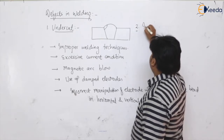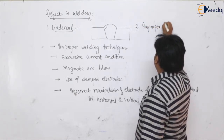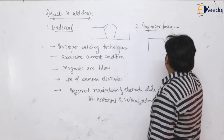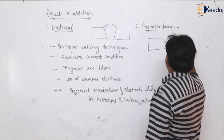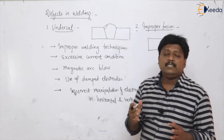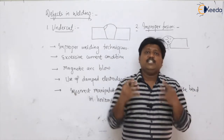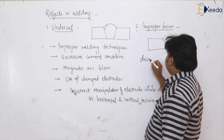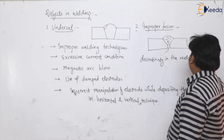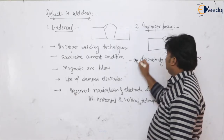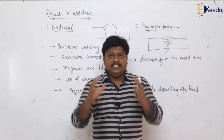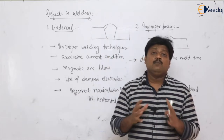The next defect is improper fusion. It appears like some kind of discontinuity in the weld zone. So improper fusion is nothing but you can see a discontinuity in the weld zone — this is also called incomplete fusion.